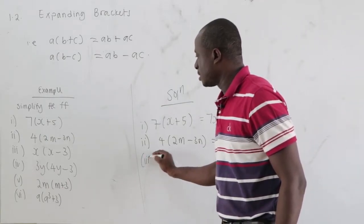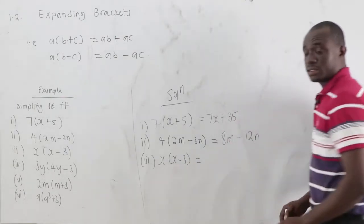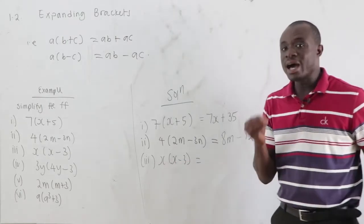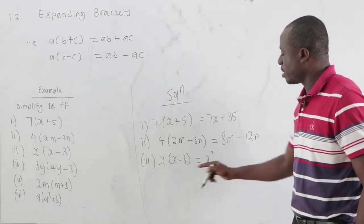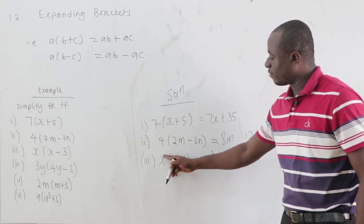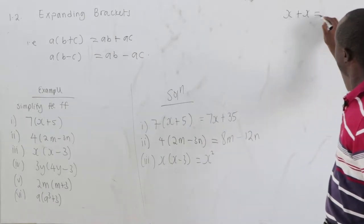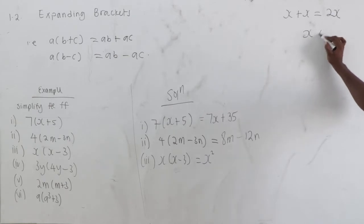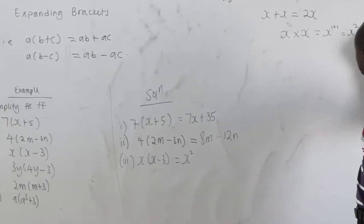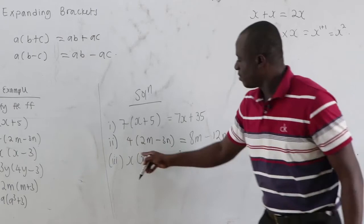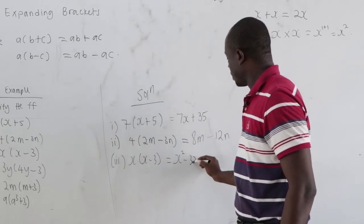Third: x times x minus 3. x times x: when bases are the same we add exponents, so 1 plus 1 equals 2, giving x squared. Note that x plus x equals 2x, but x times x equals x squared. Then x times negative 3 equals negative 3x. So the answer is x squared minus 3x.